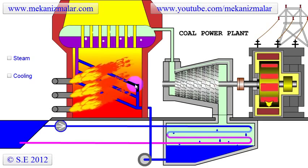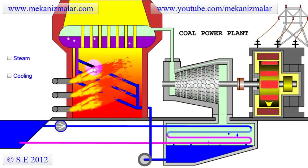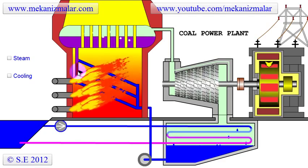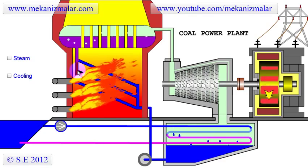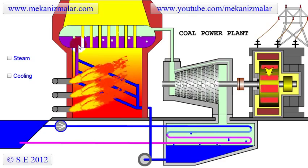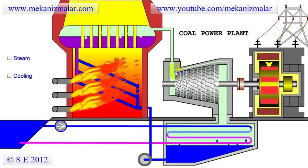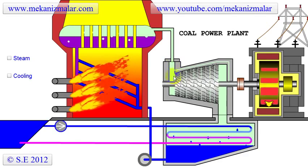This heat passes to the water inside the coils located in the furnace. The hot water is then forced to move to the boiler, where it evaporates and generates high-pressure steam.